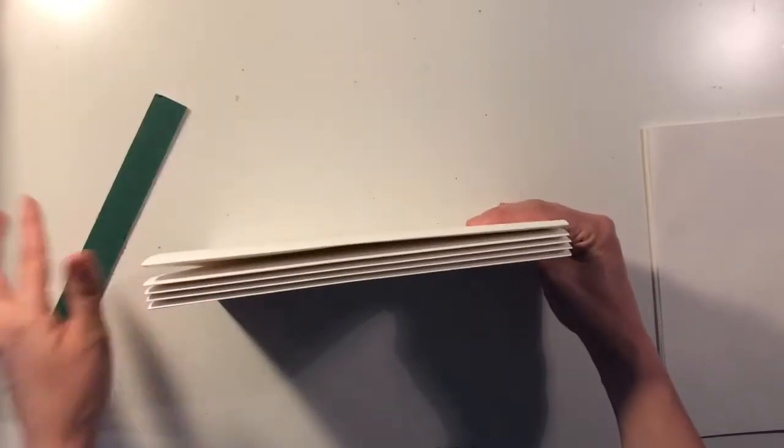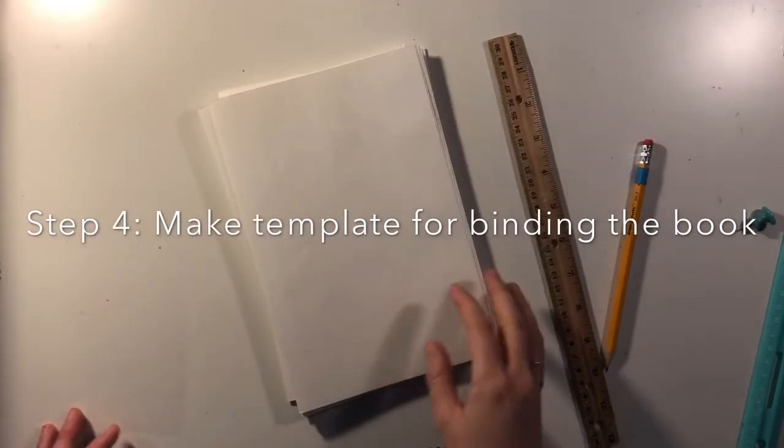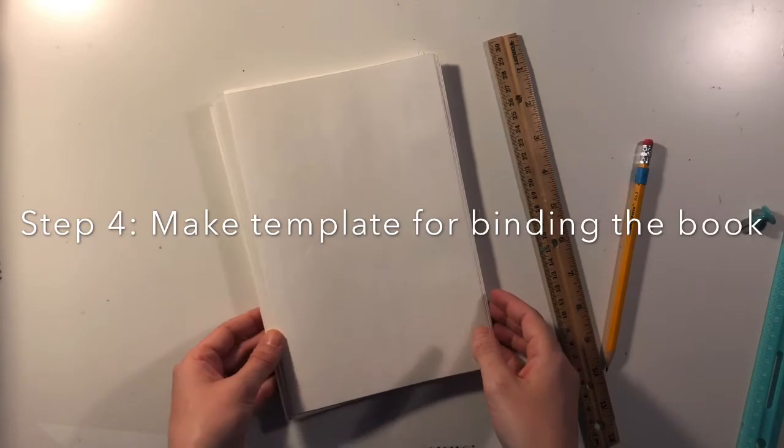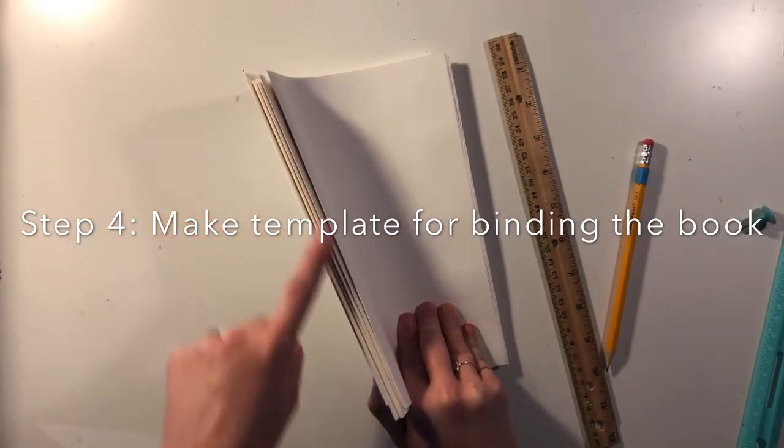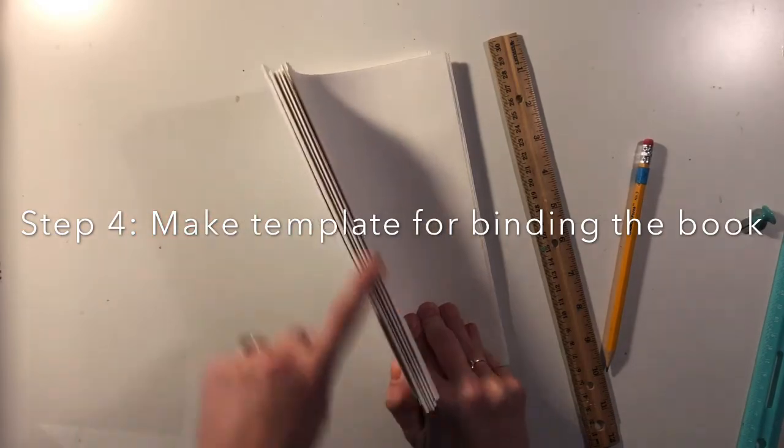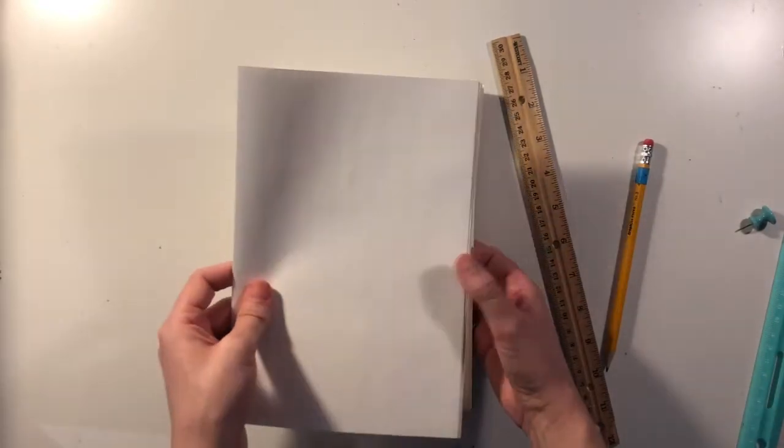Now the last step that we're going to do today is we're going to measure out where the holes need to go for the sewing portion, in order to get all of our signatures sewn together along the spine. You're going to take one of your signatures and set the other ones off to the side, and you'll need a ruler and a pencil.